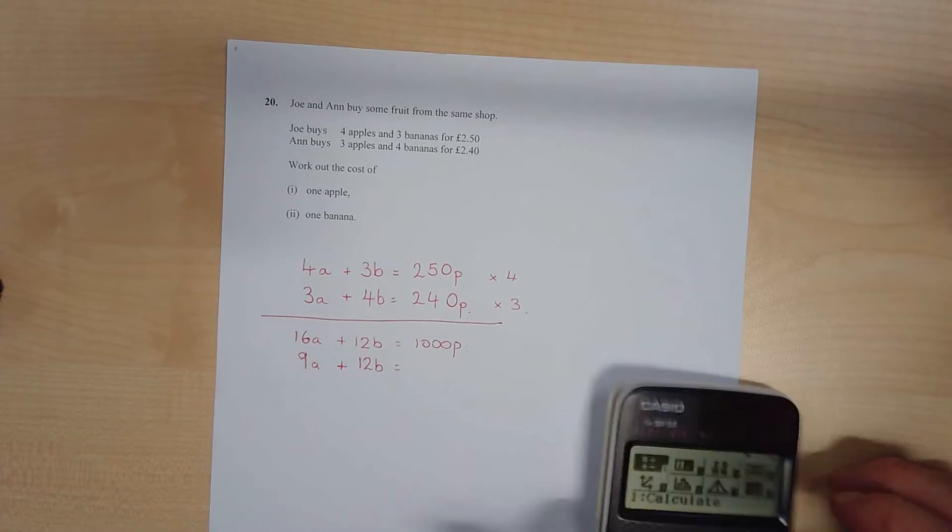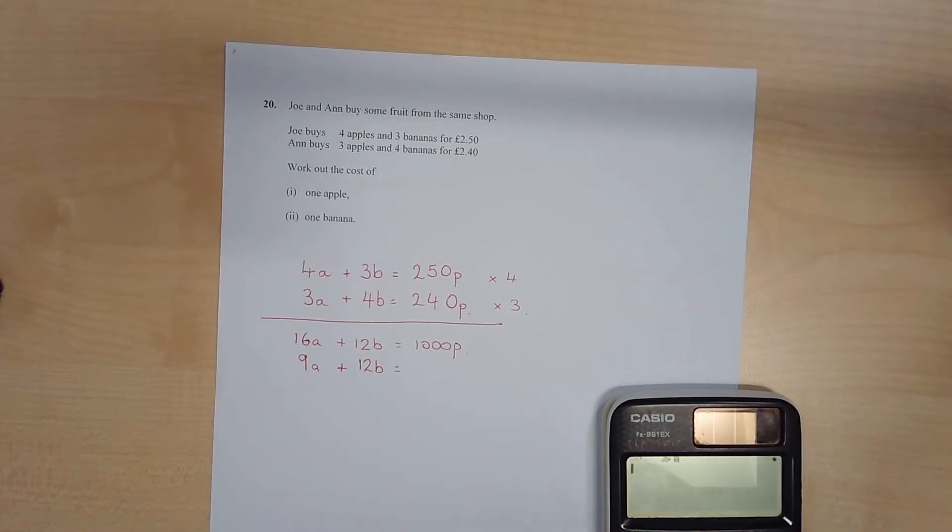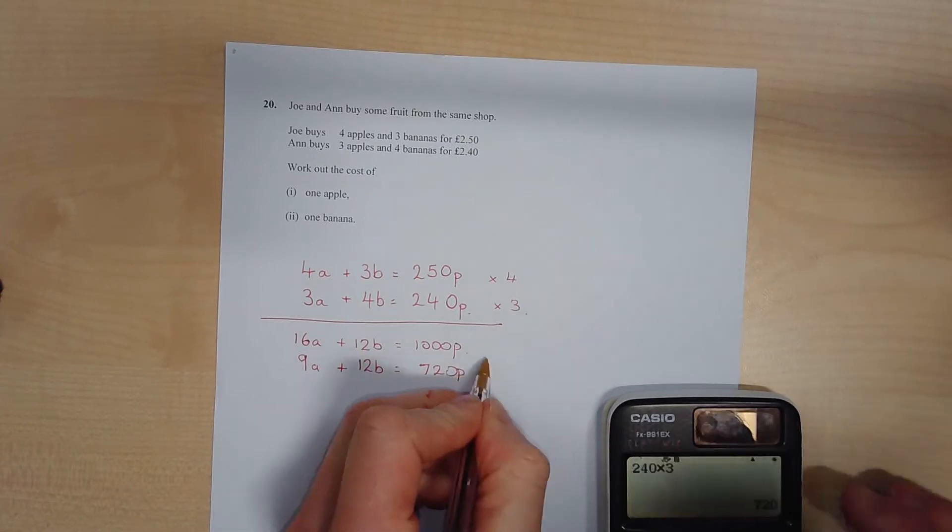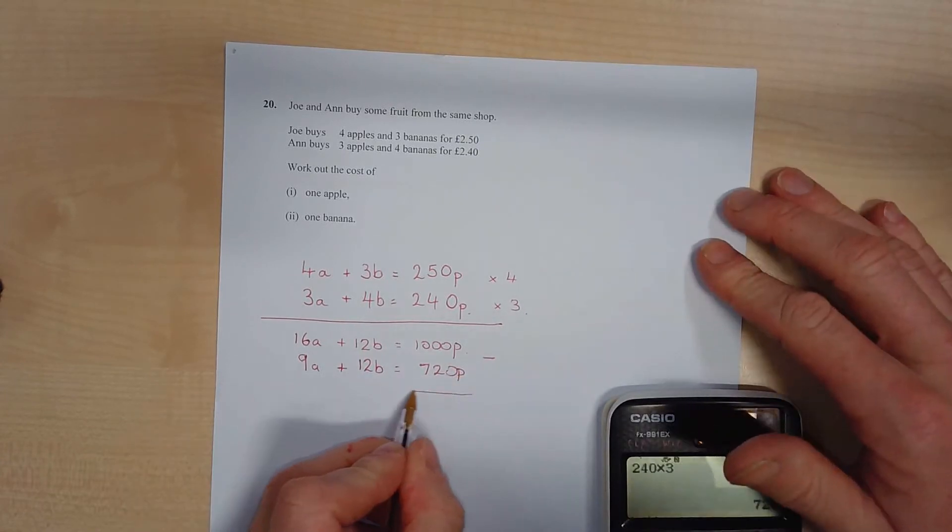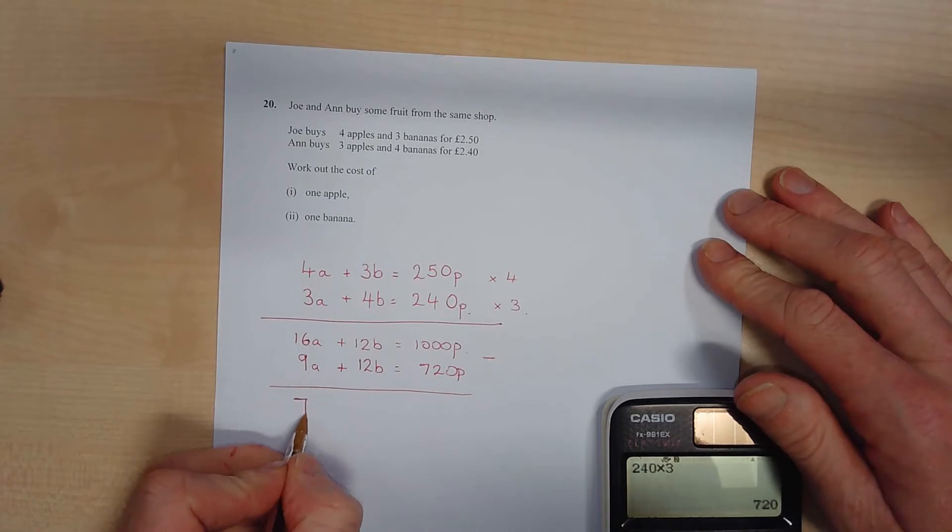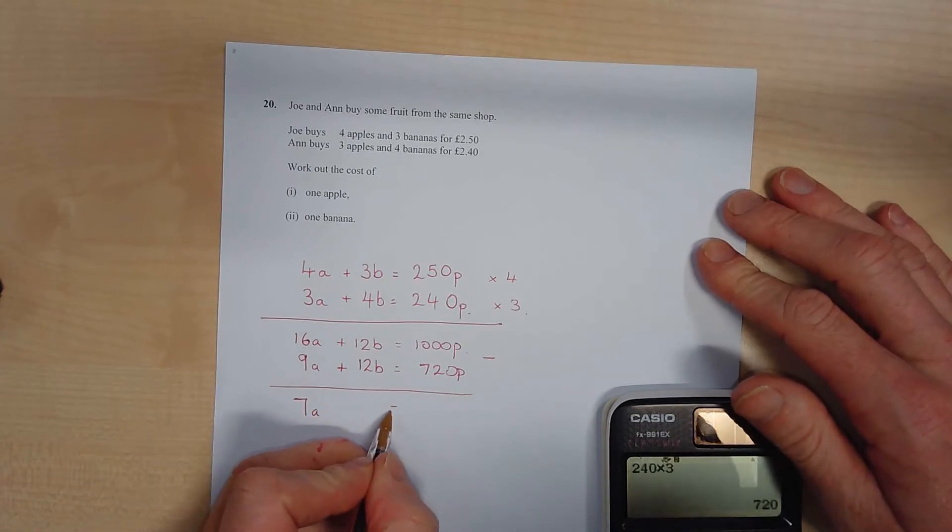And this one by 3 is 9 apples plus 4 times 3, there's my 12 bananas. I'm just going to double check this one. 240 times 3 is 720. Okay, and now we've got them matched up.